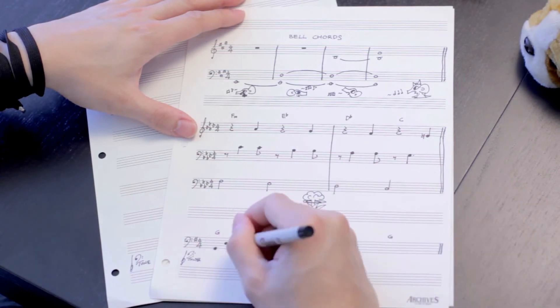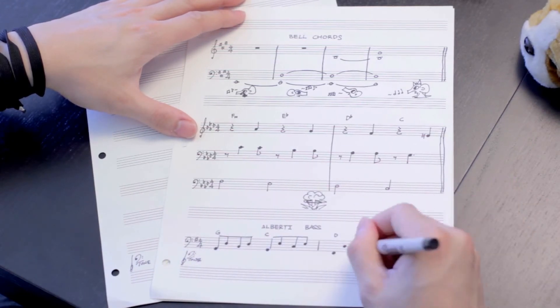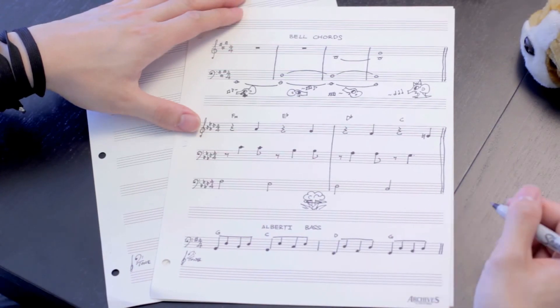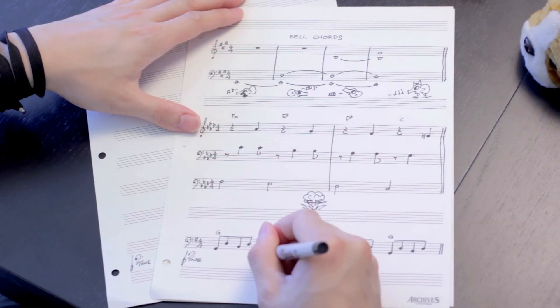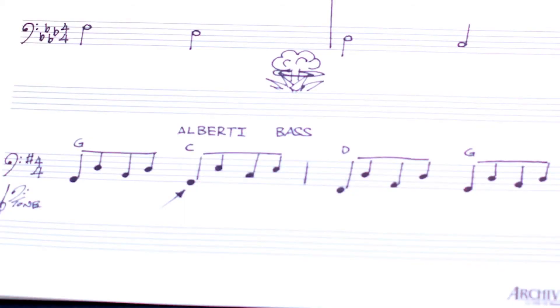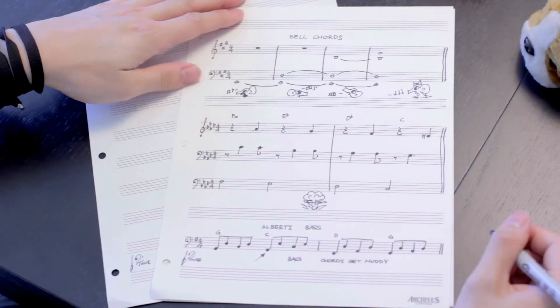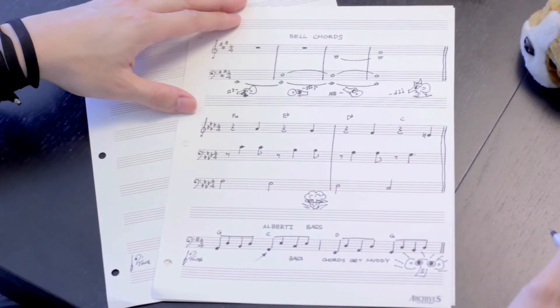Note that the lowest note in an Alberti pattern may not be the root of the chord. Bass is often a great place to use arpeggios because chords played that low simultaneously can sound muddy and be hard to hear.